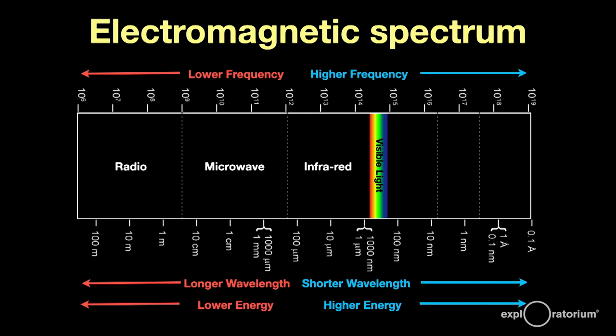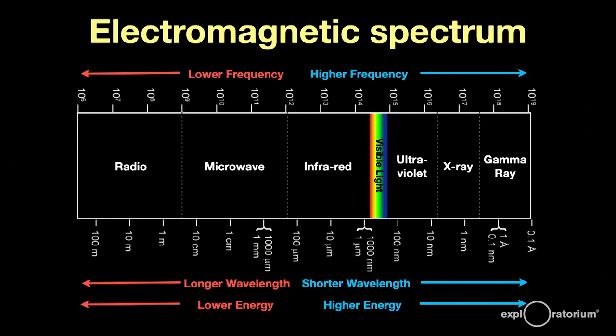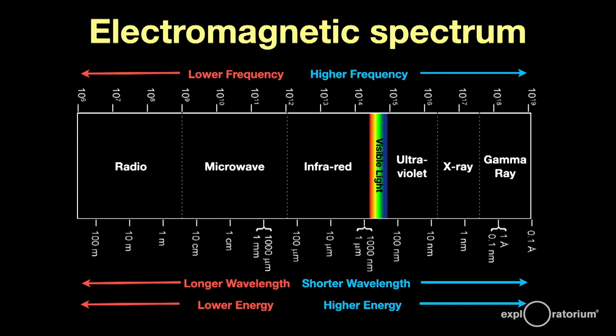Above our tiny octave of visible light, we have ultraviolet, X-rays, and gamma rays — all invisible to the human eye as well. This tremendous set of frequencies is called the electromagnetic spectrum. Our eyes have evolved to use the frequencies most available from the sun, which is visible light.